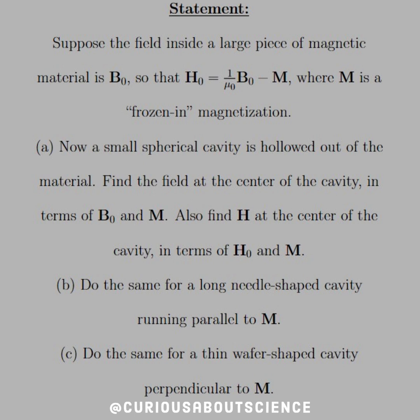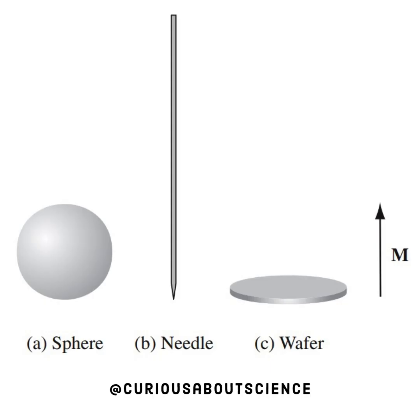So we've seen this before with the electrostatic case and polarization, but let's go back and look at our diagram. We have a sphere, a needle, and a wafer with magnetization running up.